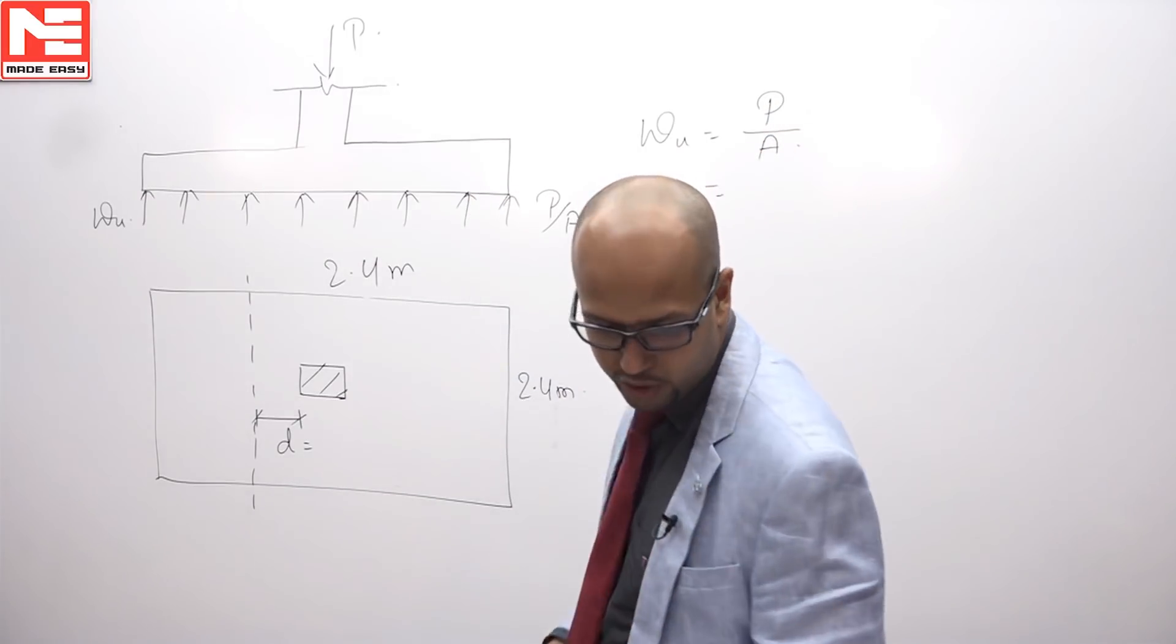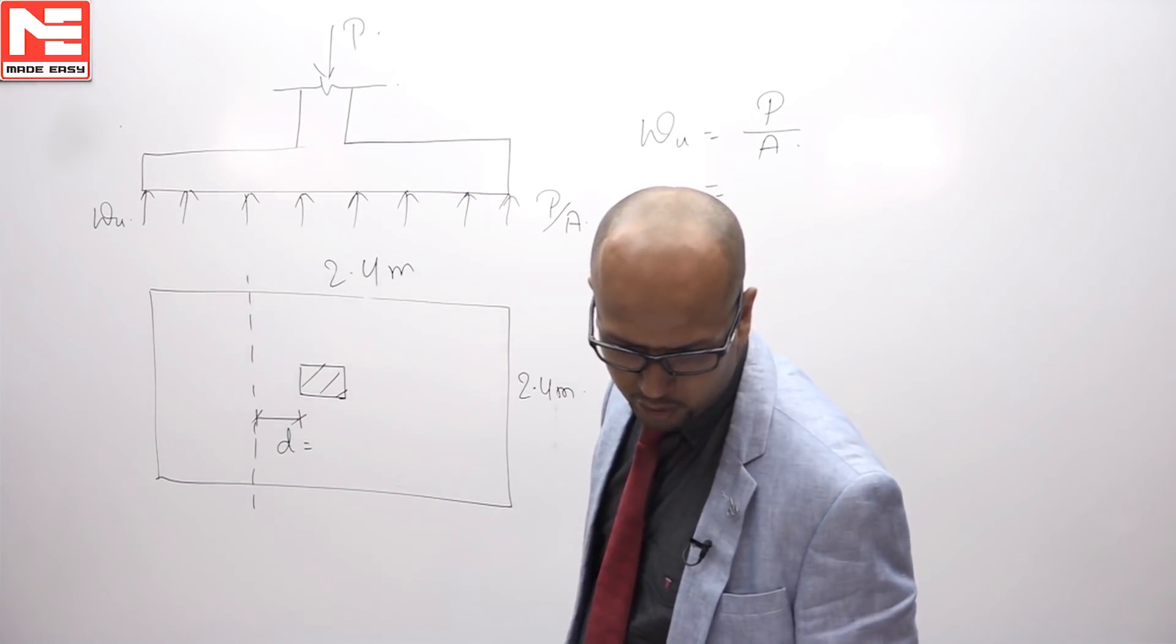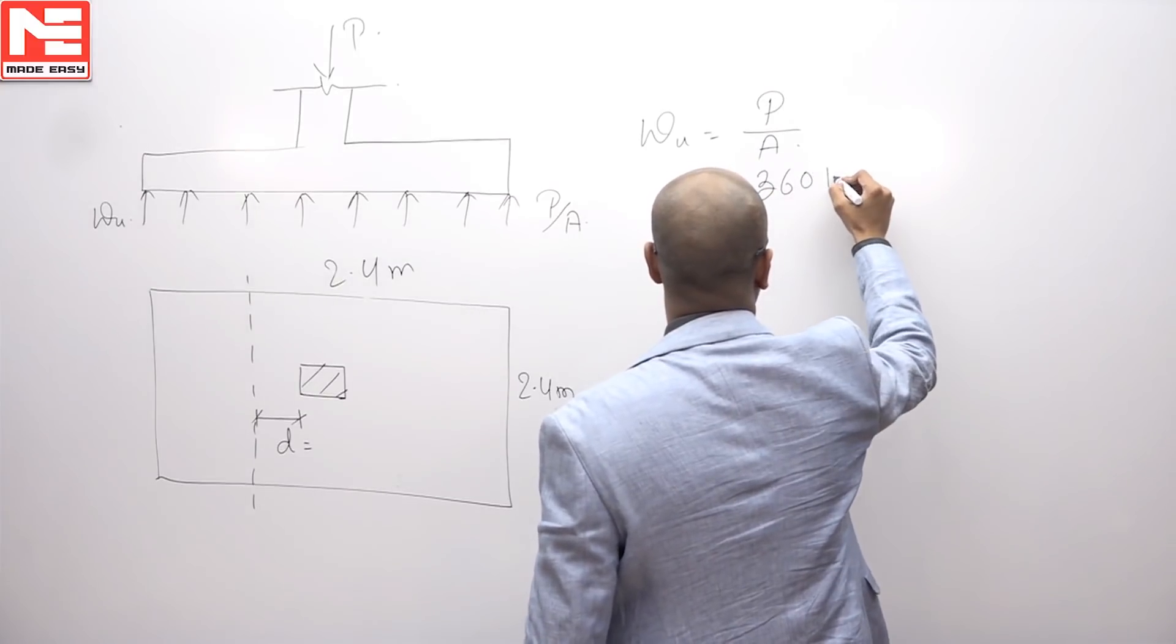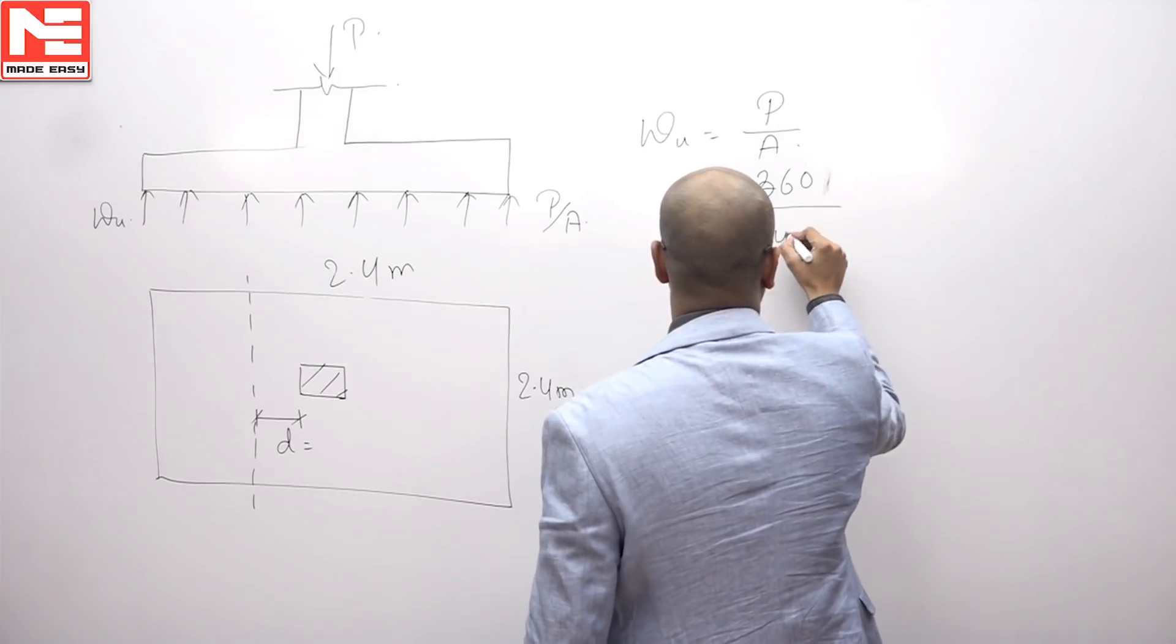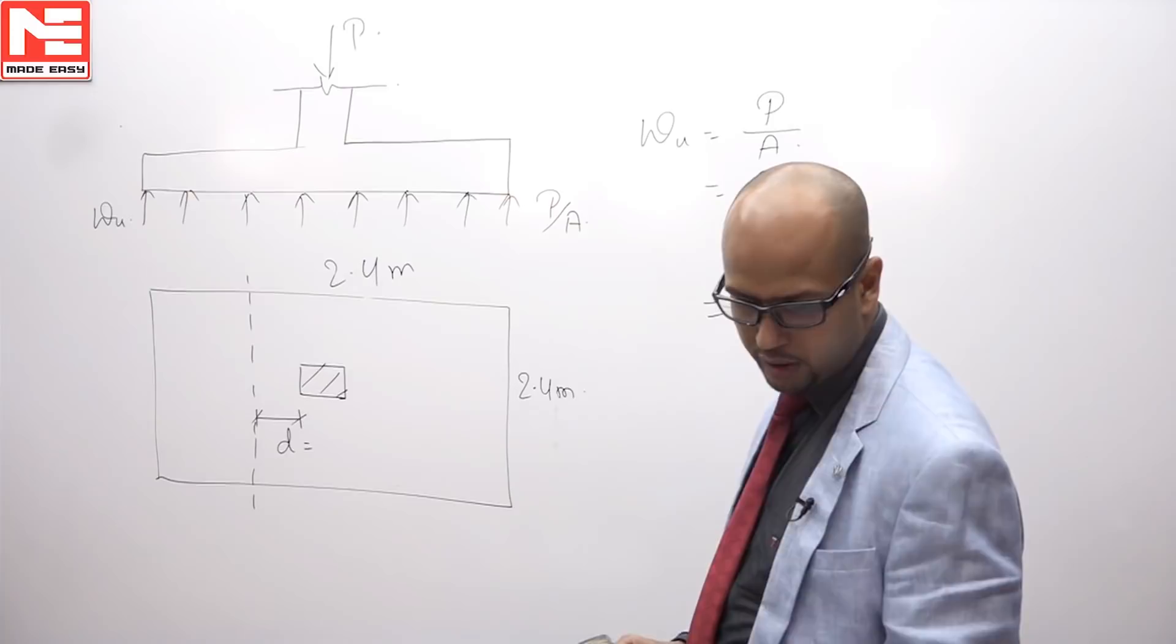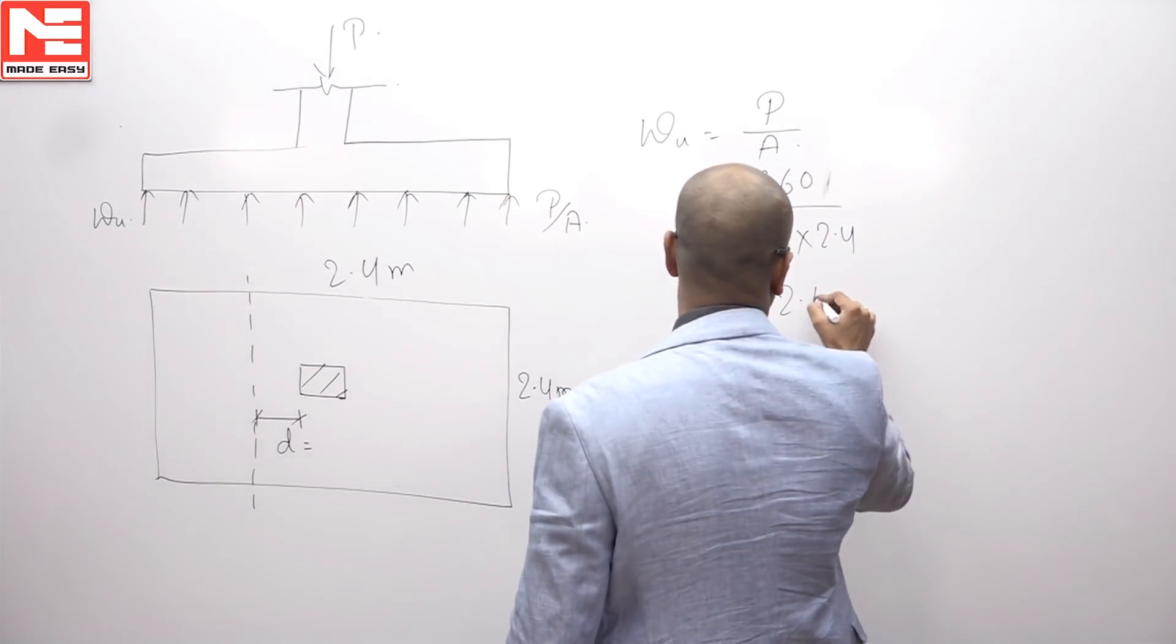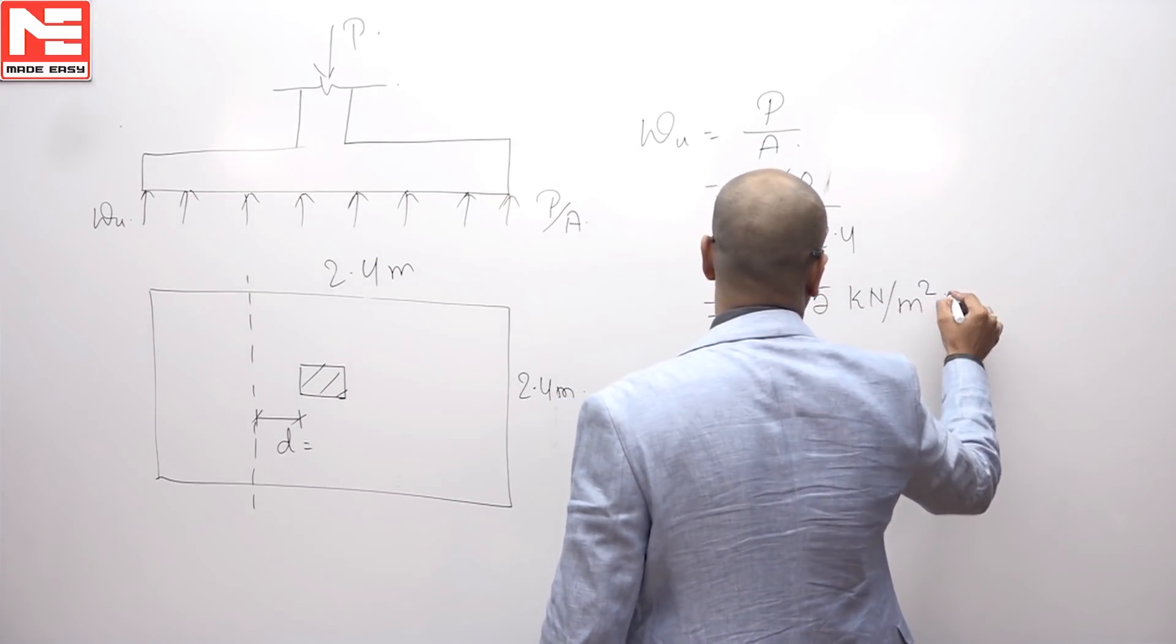P is already given in the question and that is 360 kilo Newton divided by area 2.4 into 2.4. After calculation you will get 62.5 kilo Newton per meter square.